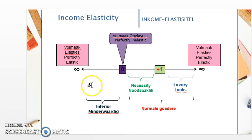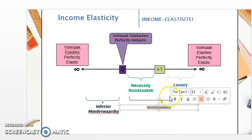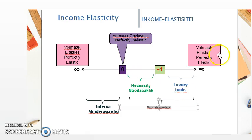We can divide a good into two types. If the elasticity has a value between zero and negative infinity — a negative value — it is an inferior good, meaning as your income increases you buy less of the good. If the value is positive, it is a normal good, meaning as your income increases you demand more of the good.